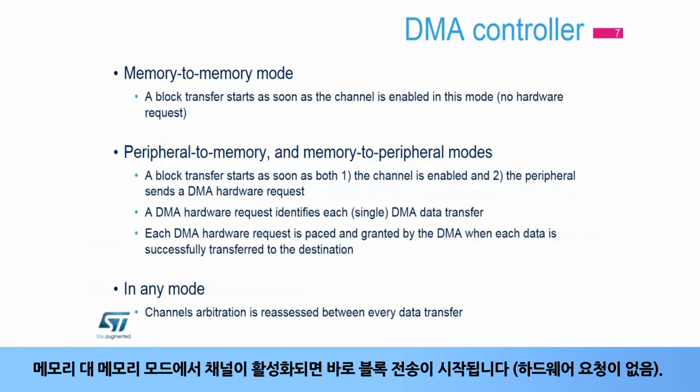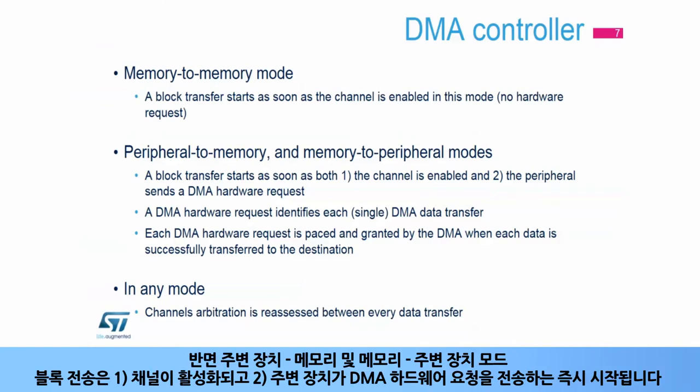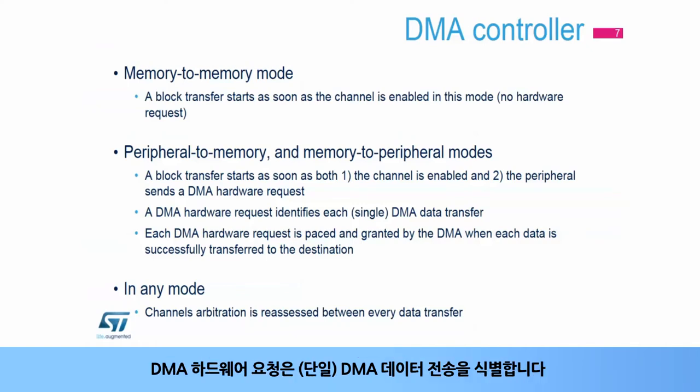In memory-to-memory mode, a block transfer starts as soon as the channel is enabled — there is no hardware request. Whereas in peripheral-to-memory and memory-to-peripheral modes, a block transfer starts as soon as both the channel is enabled and the peripheral sends a DMA hardware request. A DMA hardware request identifies a single DMA data transfer.